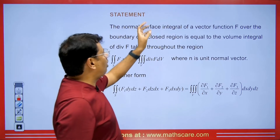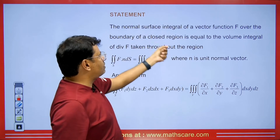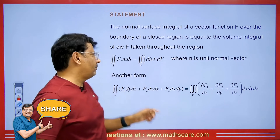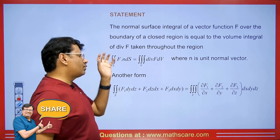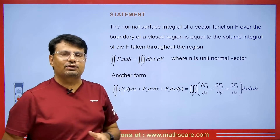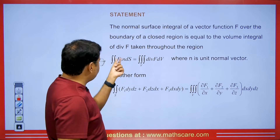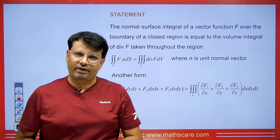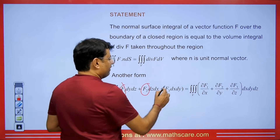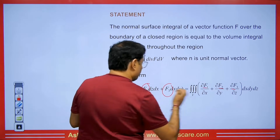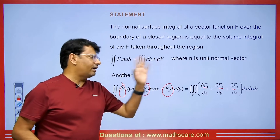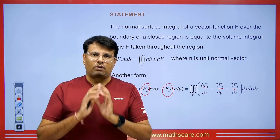The normal surface integral of a vector function F over the boundary of a closed region is equal to the volume integral of the divergence of F taken throughout the region. This means we can solve a surface integral by taking the volume integral of the divergence of F. The N here is the unit normal vector. There is another form using F1, F2, F3, and we apply limits to perform the volume integral.